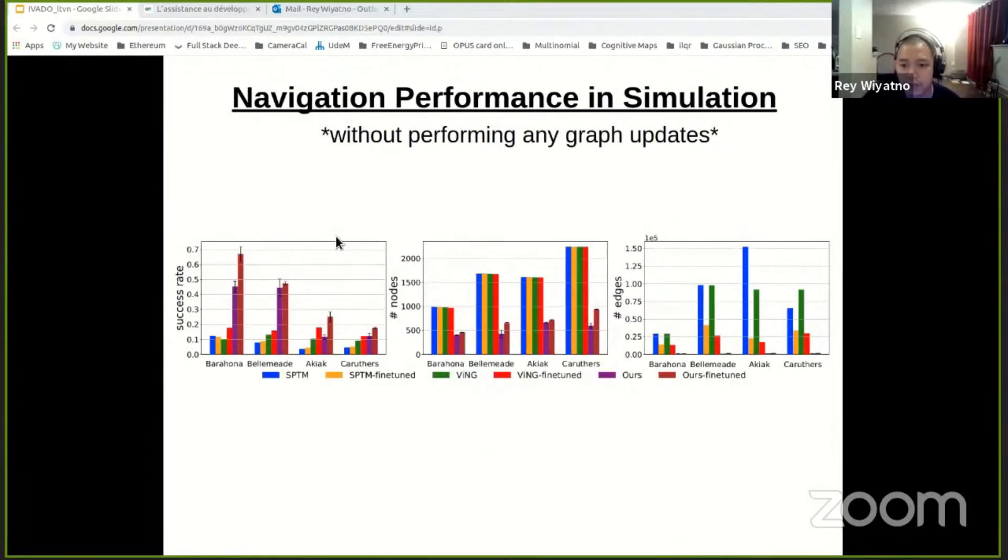And here we report the success rate as well as the number of nodes and edges in the graph. And we can see that our method consistently yields higher performance navigation success rates, especially after model fine-tuning. And in addition, our graph has a significantly fewer number of nodes and edges, which keeps planning cost practical when we scale to larger environments because our map is going to grow substantially. But with our method, we can make sure that the graph is still manageable in size.